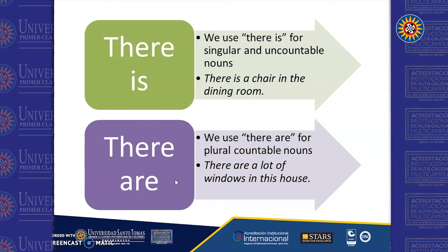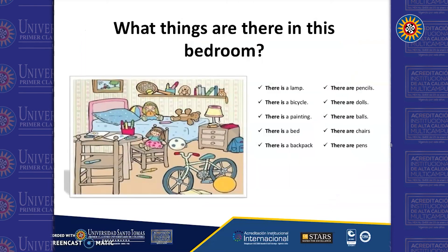So if it is only one object, you'll say "there is a chair in the dining room." But if there are more than one—let's say two, three, or many—you can say "there are a lot of windows in this house." Now let's pay attention to this picture. This is a bedroom.